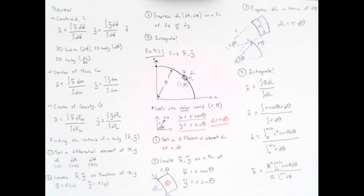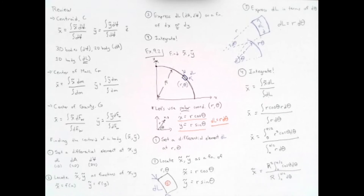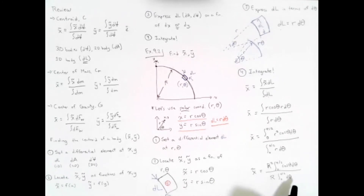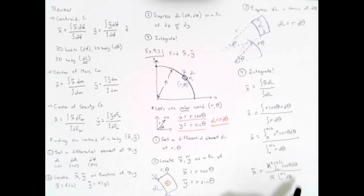Taking r out of the integrals, we get R squared times the integral from 0 to π/2 of cosine theta dθ in the numerator, and R times the integral from 0 to π/2 of dθ in the denominator. This is a very easy integral. The integral of cosine theta dθ is sine theta, and the integral of dθ is simply theta. So we have R squared times sine theta evaluated from 0 to π/2, over R times theta evaluated from 0 to π/2.